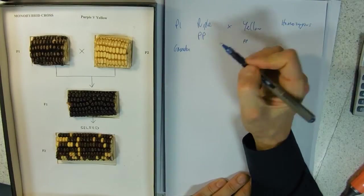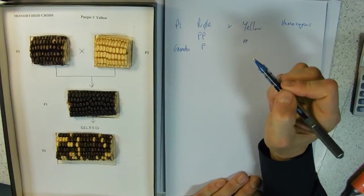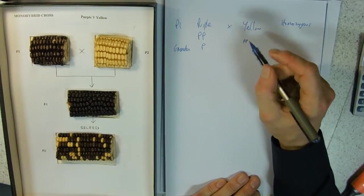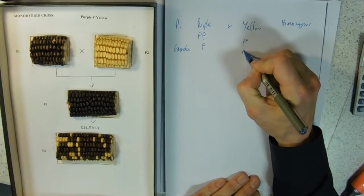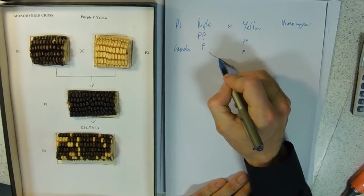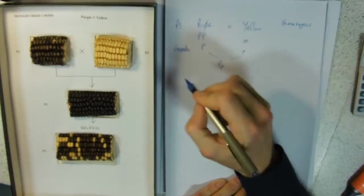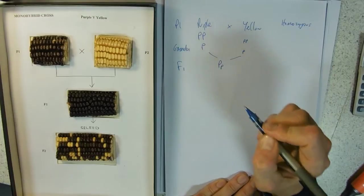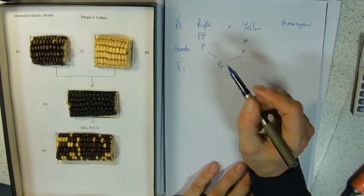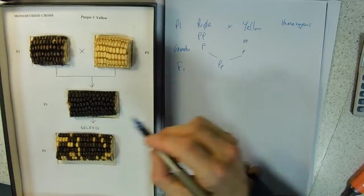When we cross these, what gametes can we have? Well, only a big P from the purple and a little p from the yellow. When these are added together - big P little p - that is our F1 generation, our first filial generation.